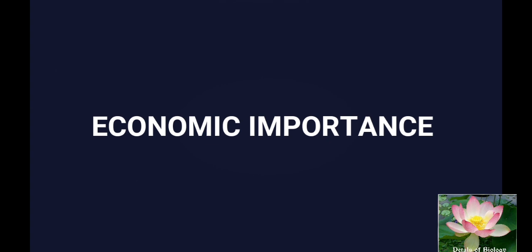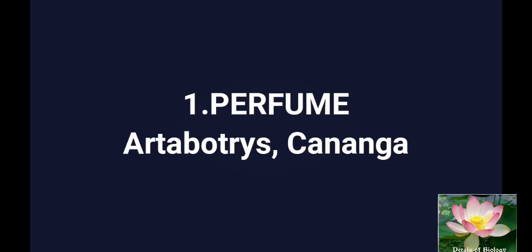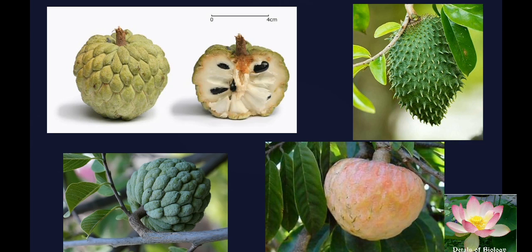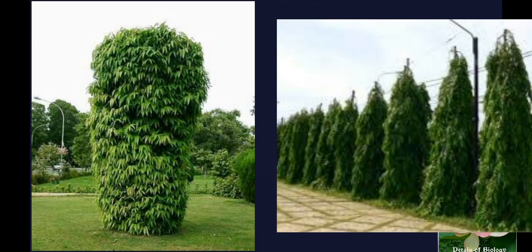Economic importance of Annonaceae: Artabotrys, Kananga, etc. are used in the perfume industry for making fragrant perfumes. The oil extracted from the flowers of Kananga is commonly known as Ylang-ylang and it is very common in the perfume industry and highly in demand. The fruits of most of the Annonaceae species are edible and available in the market. Polyalthea longifolia is used as a very good ornamental plant and is used in topiary.